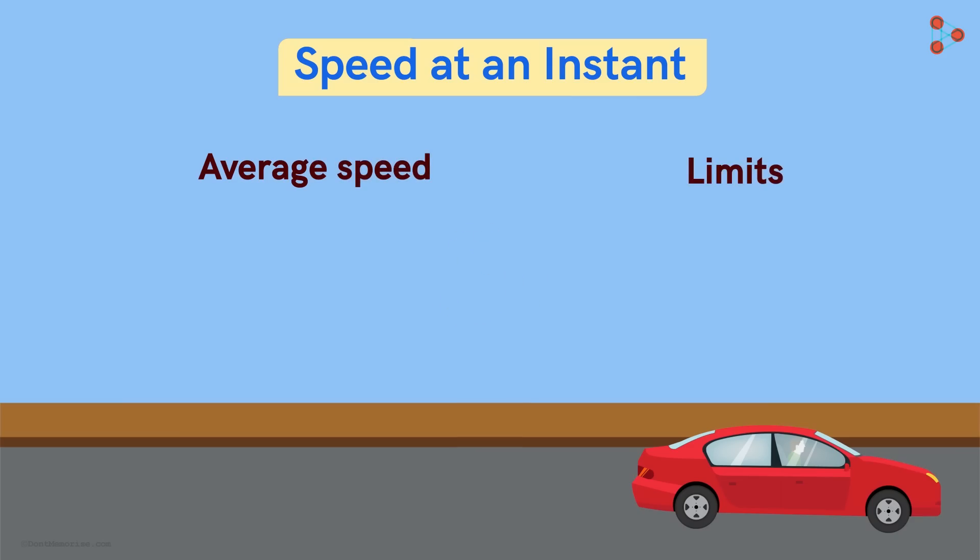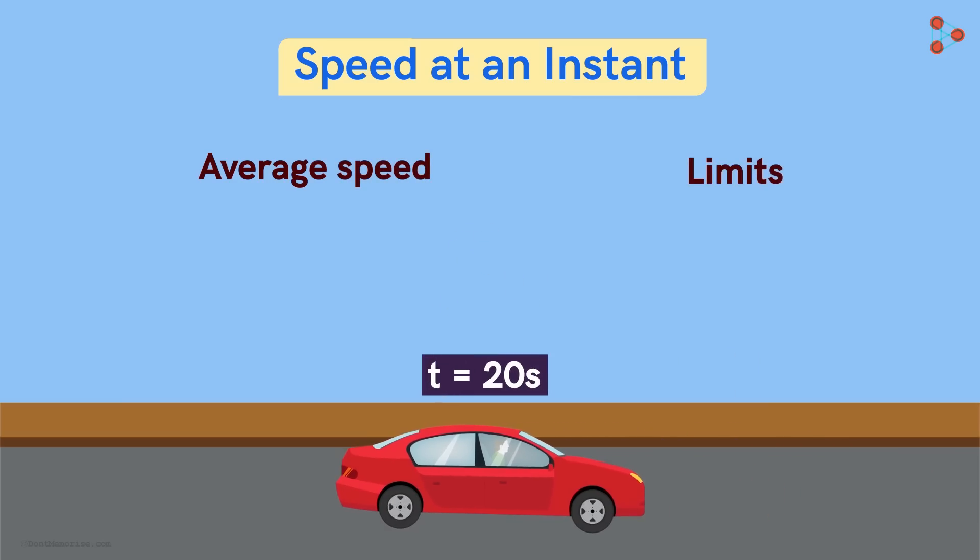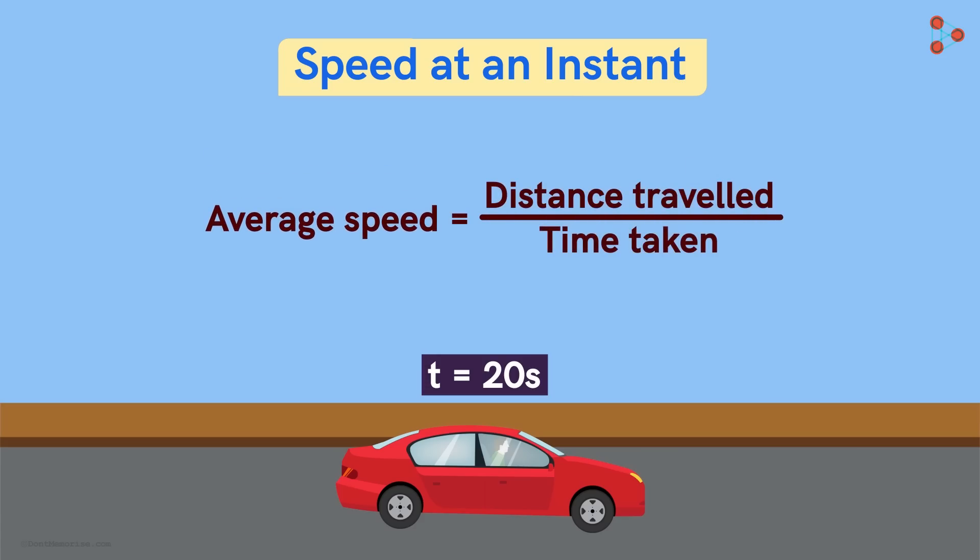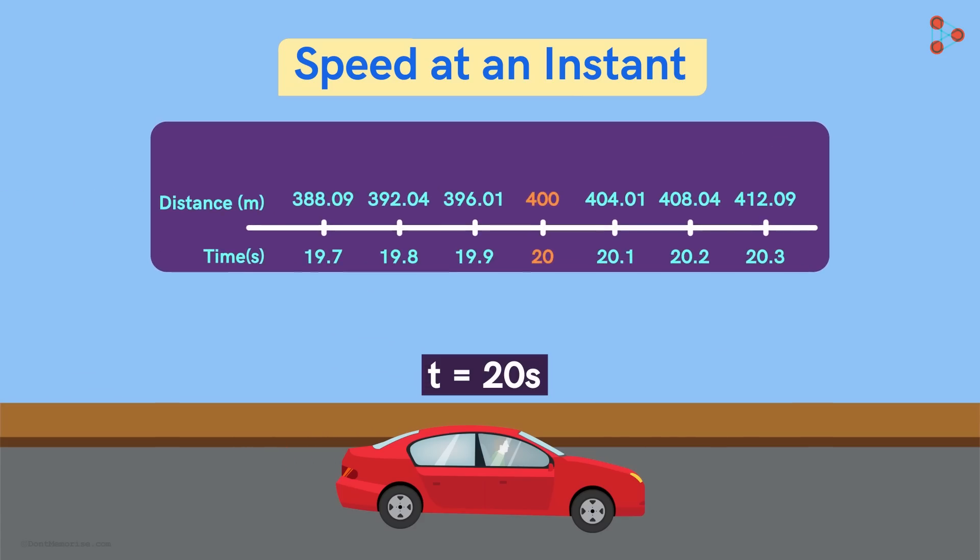Let's say we want to find the speed at this instant. For this, we find the average speed of the car in small time intervals near this position. As we find the average speeds here, we see that these speeds approach a number which will be the speed at this instant.